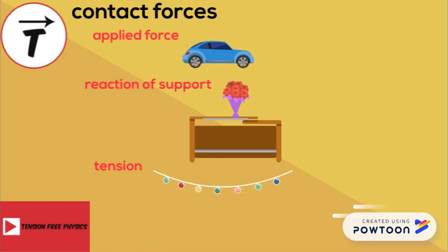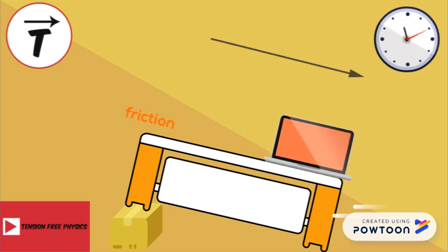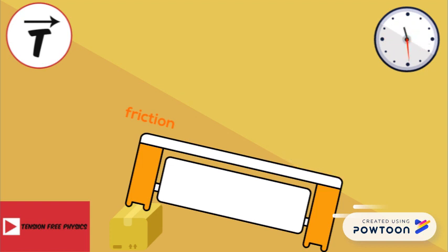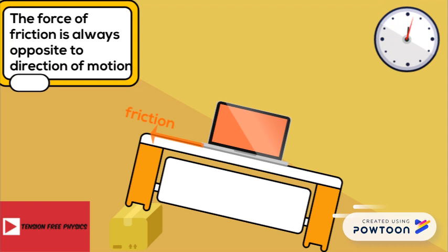The last contact force we will speak about is the force of friction. The force that prevents the sliding of the laptop is the force of friction between the laptop and the surface of the table. The force of friction exists when a body is moving or has a tendency of motion on a rough surface, and it is always opposite to the direction of motion.